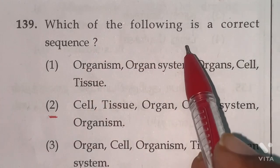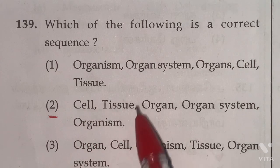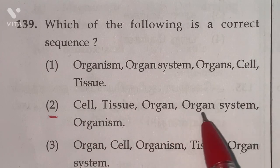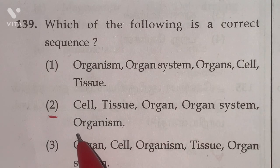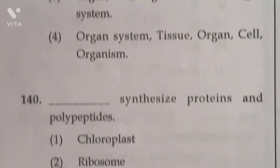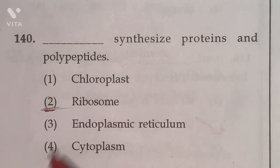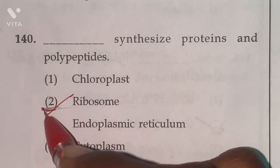139th. Which of the following is a correct sequence? Cell, group of cell tissue, group of tissue organ, group of organ organ system. These things group called organism. Option 2 is the right answer. Next 140th. Ribosome synthesizes proteins and polypeptides. Option 2 is the right answer.